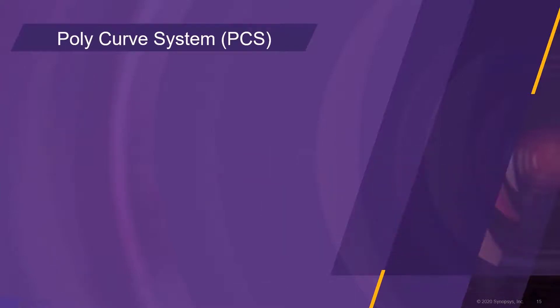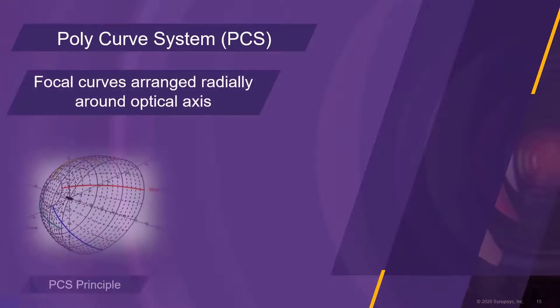The poly curve system, in short PCS, also uses the FunGeo principle. The PCS tool arranges focal curves radially around an optical axis, similar to the ribs of an umbrella. The surface is then created between the ribs, similar to the skin of the umbrella.